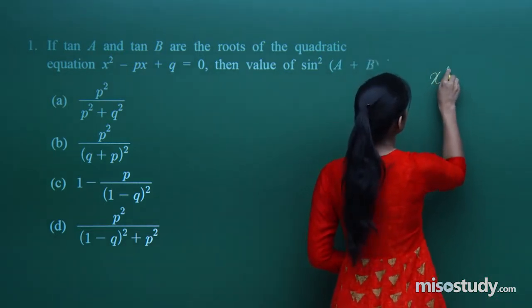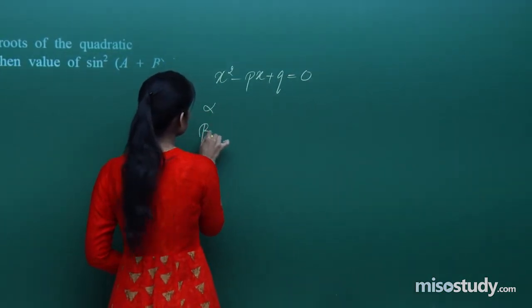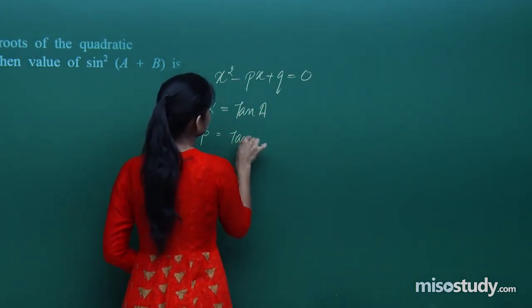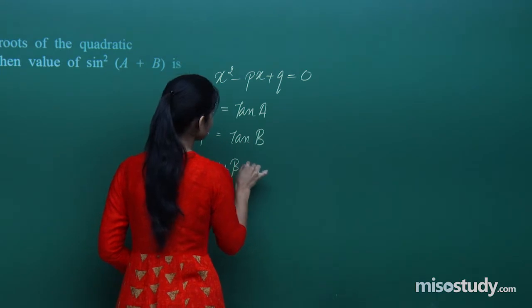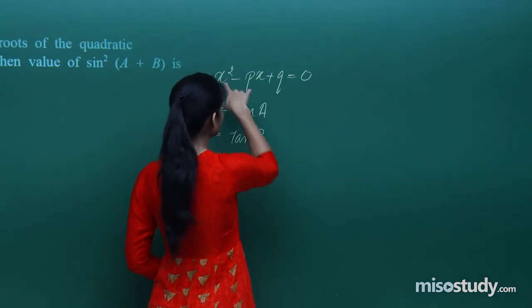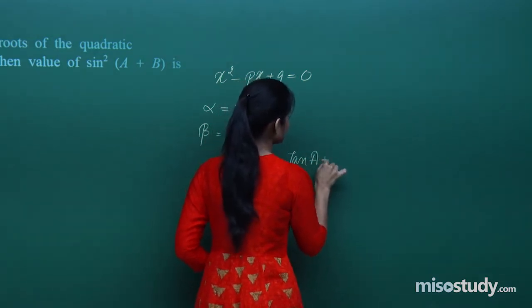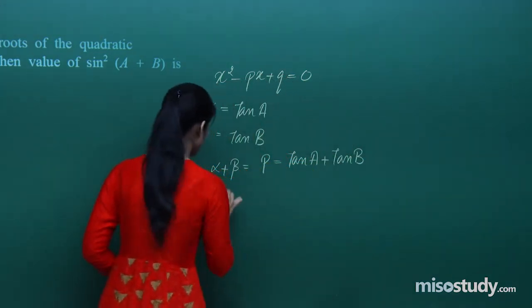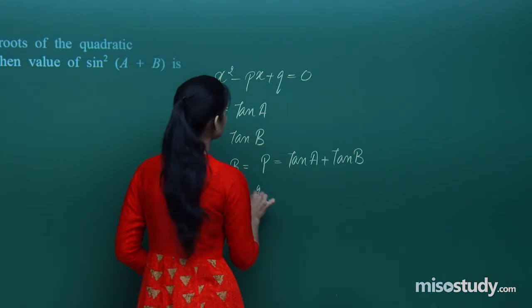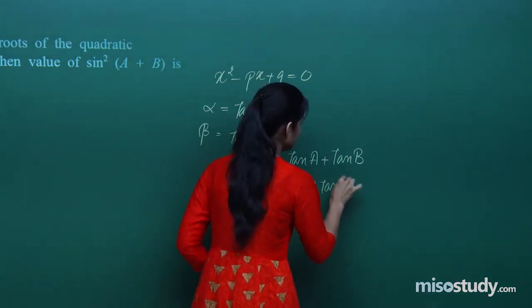The quadratic equation given is x² - px + q = 0, where alpha is tan a and beta is tan b. The sum of roots is minus of coefficient of x upon coefficient of x², which gives p. So tan a + tan b = p. The product of roots is the constant term upon coefficient of x², which is q. So tan a · tan b = q.